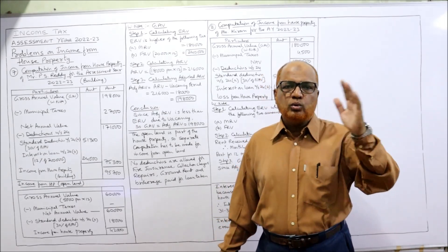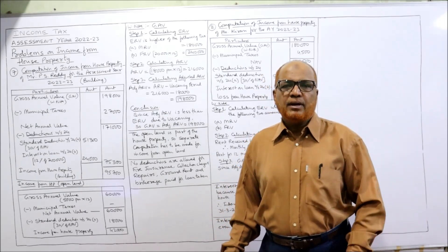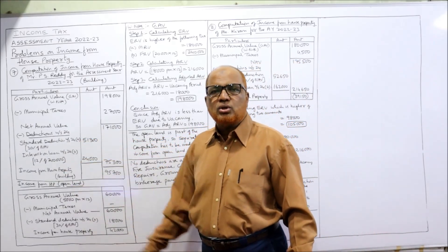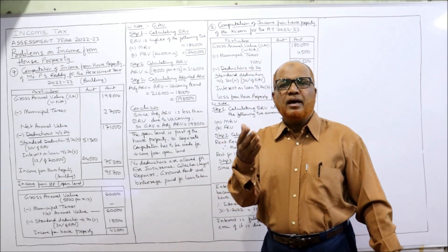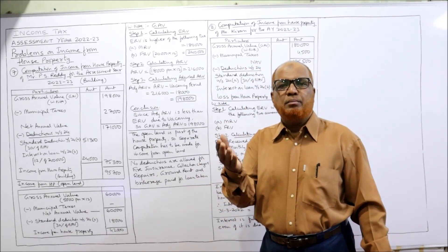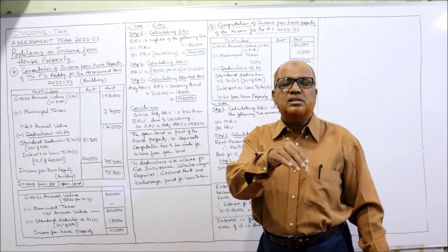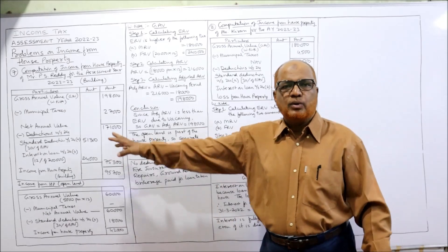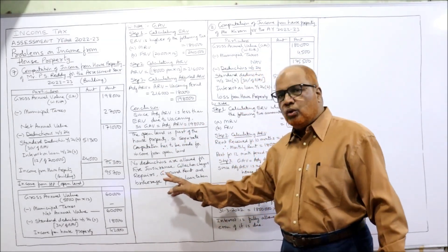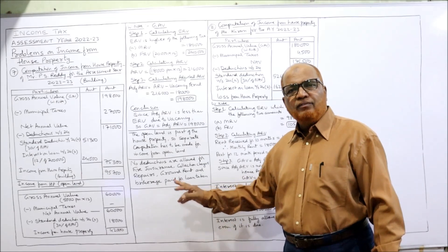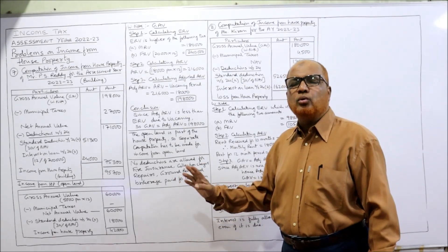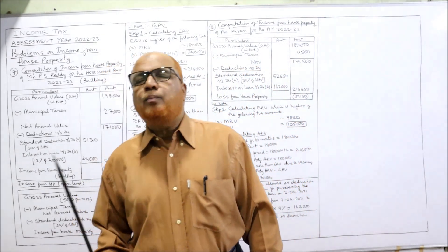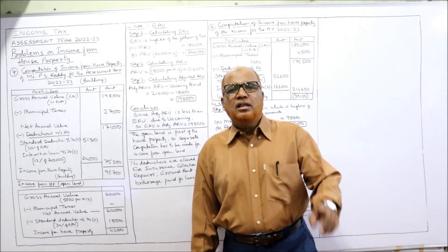From assessment year 2002-2003 onwards, no deduction is allowed for fire insurance premium, collection charges, repairs, ground rent, or brokerage paid to raise the loan. These were deductions allowed before assessment year 2002-2003, but afterwards only two deductions are available: standard deduction and interest on loan. Simply write a working note that no deductions are allowed for these expenses under Section 24.